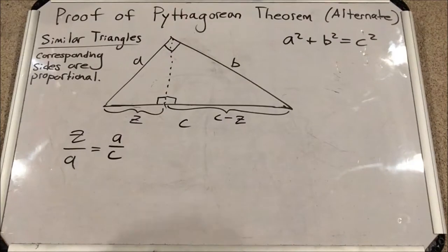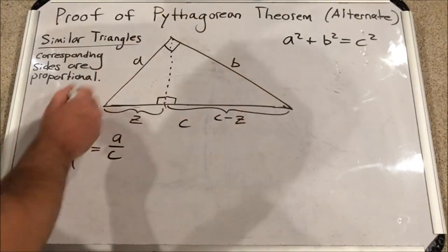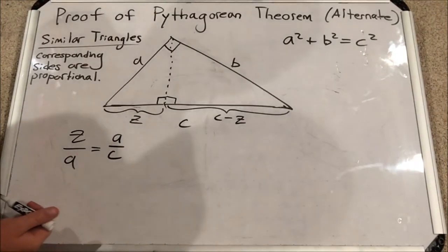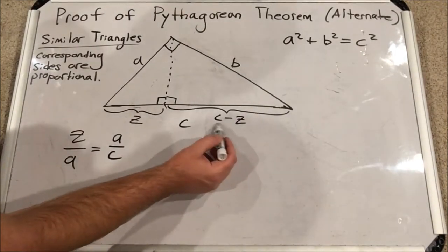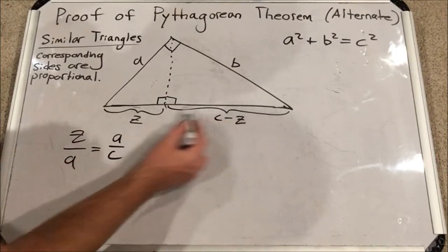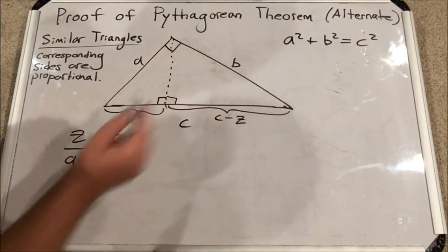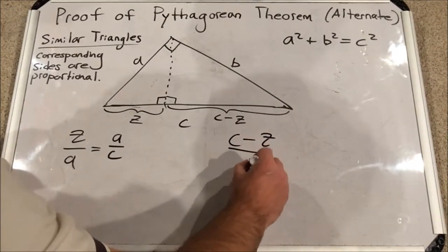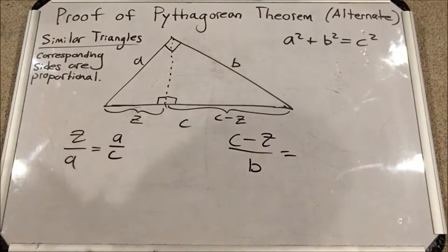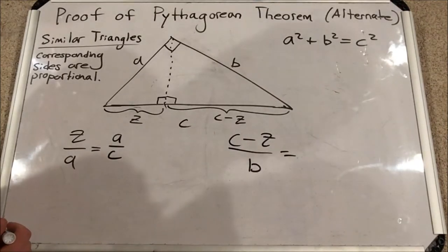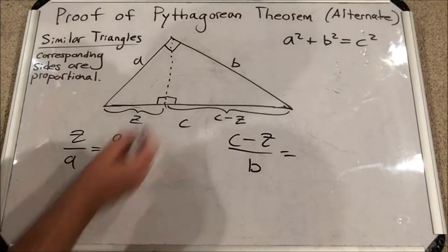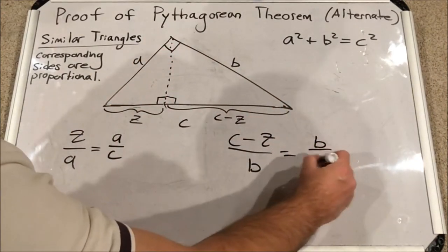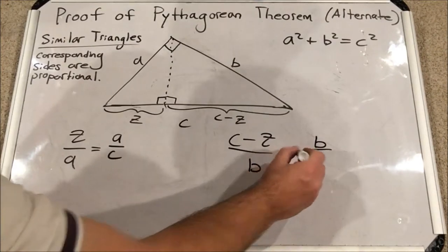Now the other proportion involves the middle-sized triangle and the large triangle. Okay, I'm going to do the same thing here, but with the larger leg. I'm going to set up a ratio of the larger leg, which is C minus Z over the hypotenuse B. So I have C minus Z over B. And I'm going to set that equal to the larger leg of the large triangle over its hypotenuse. That would be B over C. Like this.